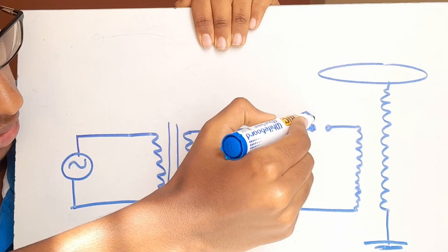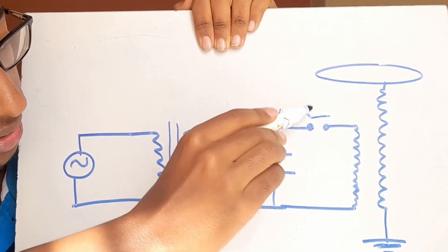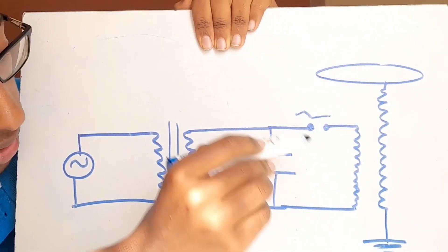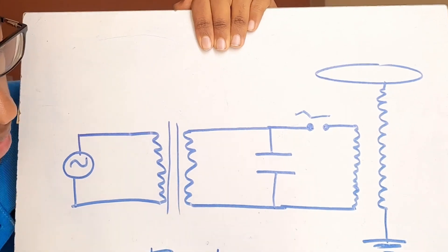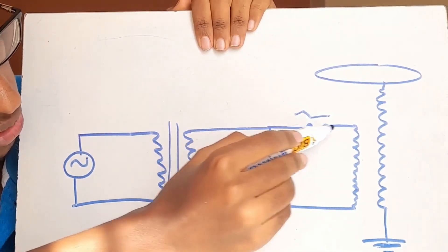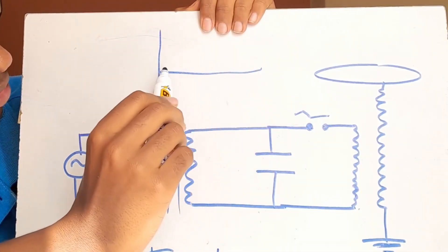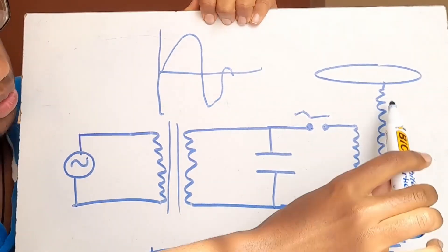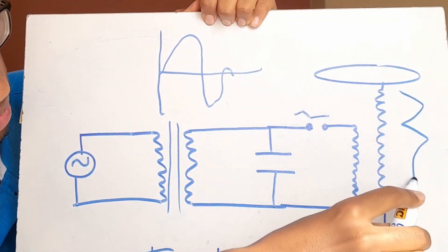A spark is created when the capacitor is fully charged and when this spark gap closes, the circuit becomes complete, thus creating the resonance frequency I explained briefly in my previous video. That resonance frequency produces a bigger voltage on the other side — a really big surge of electricity producing a much, much bigger voltage, thus creating lightning.